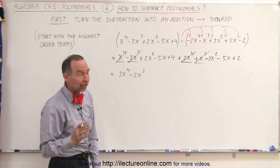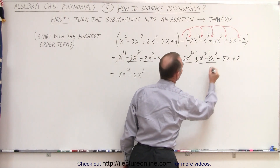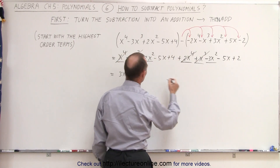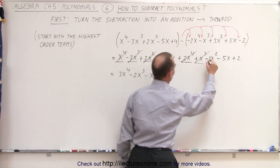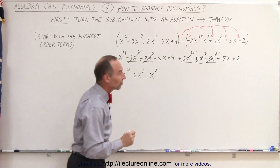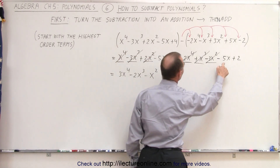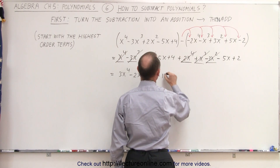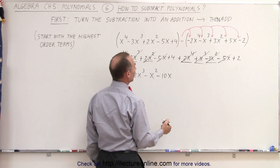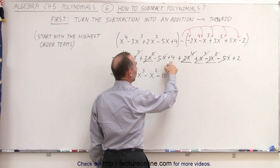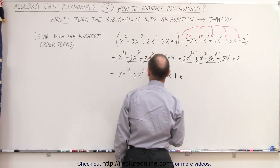Next, we have x to the second power. We have a 2x squared and a minus 3x squared; 2 minus 3 is a minus 1x squared. Next, x to the first power — we have a minus 5x and a minus 5x, that's minus 10x. And finally the constant terms: plus 4 plus 2 is plus 6.